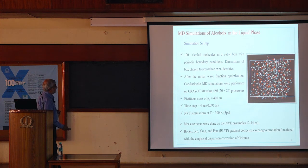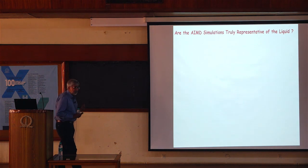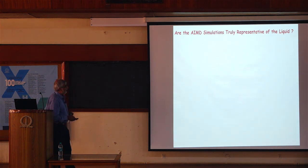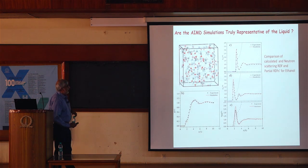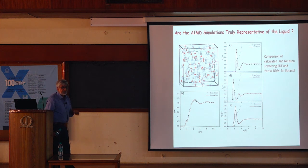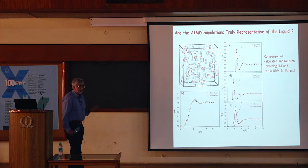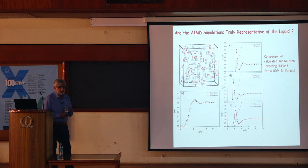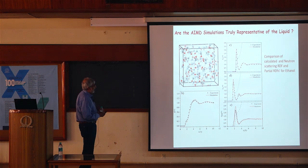When we do these simulations, the first question is: are the results truly representative of the liquid? We compare the calculated radial distribution functions with what has already been experimentally determined from X-ray or neutron scattering. Especially from neutron scattering data where isotopic substitution — replacing H with D — induces a big change in the scattering cross section, allowing us to work out partial radial distribution functions.